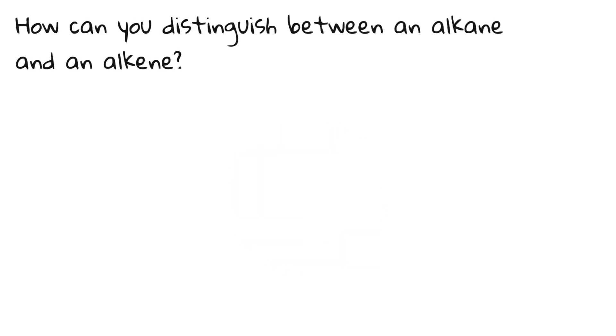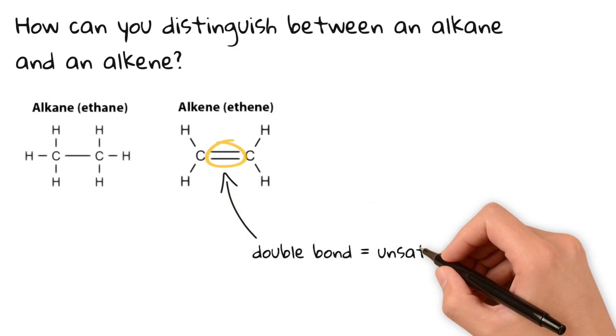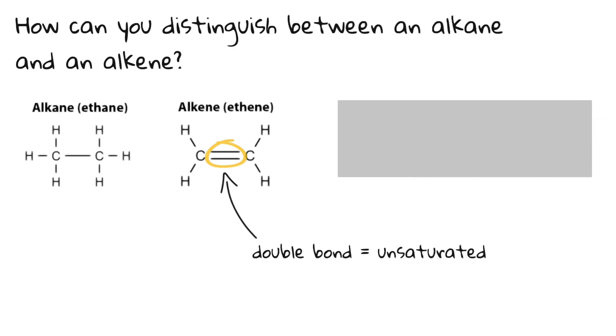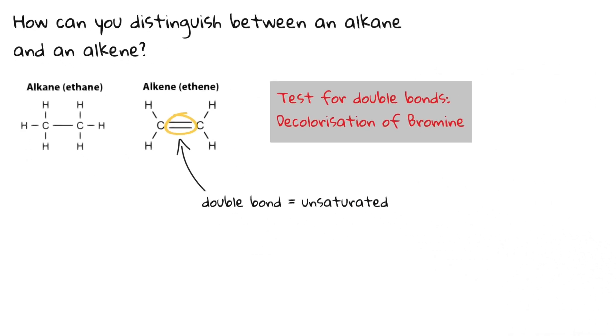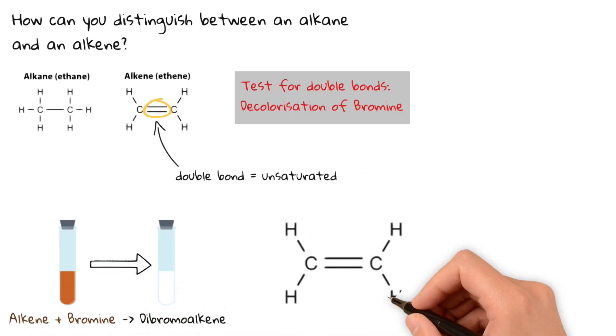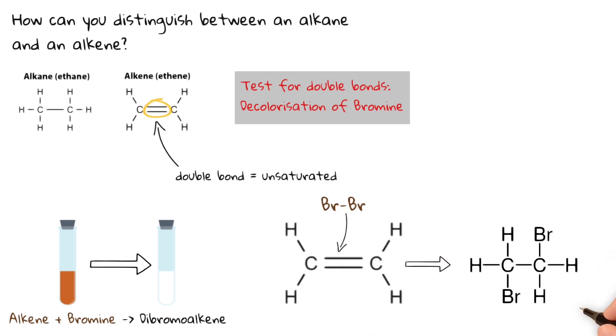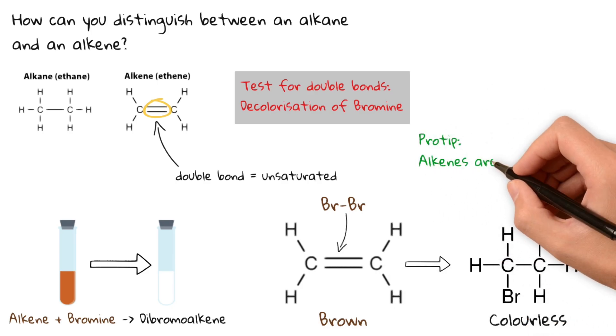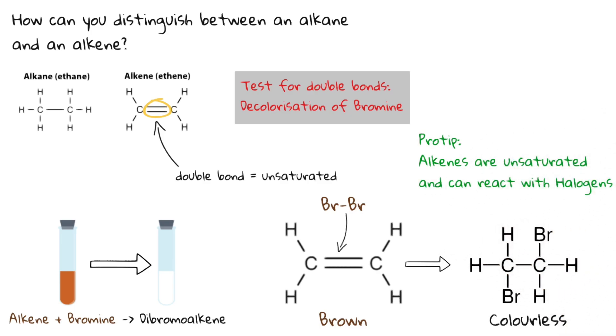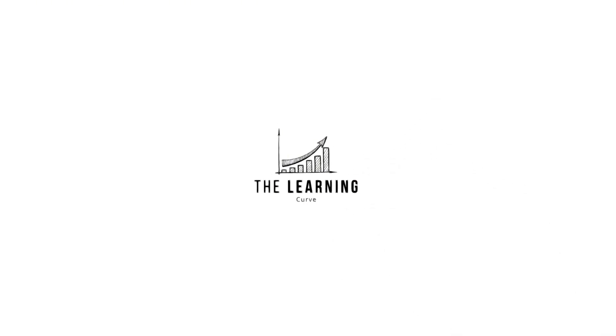This common IGCSE chemistry question requires you to know that alkenes are unsaturated hydrocarbons containing a double bond. To test for double bonds we use the decolorization of bromine water. When an alkene is added to bromine water, the solution changes from orange to colorless, confirming the presence of a double bond. This reaction happens because the bromine molecules react with the alkene forming a colorless compound. Alkanes on the other hand don't react with bromine water, so the solution stays brown-orange. Pro tip: Remember that alkenes are unsaturated and can react with halogens.